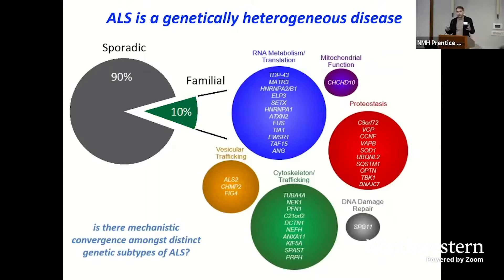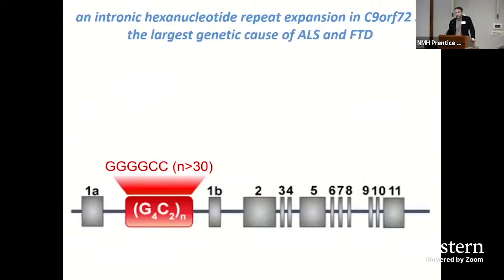We have several posters at this meeting today describing people's work on different genes, and hopefully if you have time you'll be able to see some of that work. What I'd like to do today over the next 18-19 minutes or so is tell you about some unpublished work focused on C9orf72, which is the largest genetic contributor to ALS as well as frontotemporal dementia.